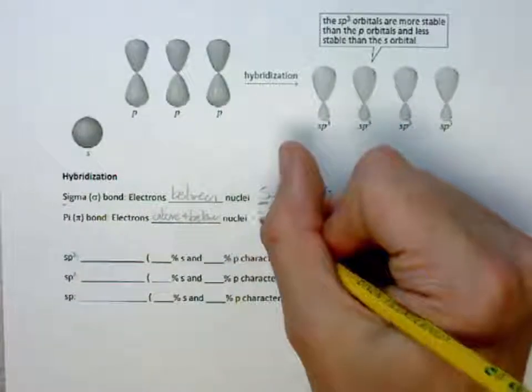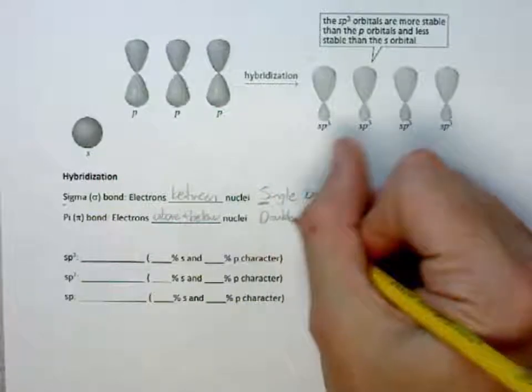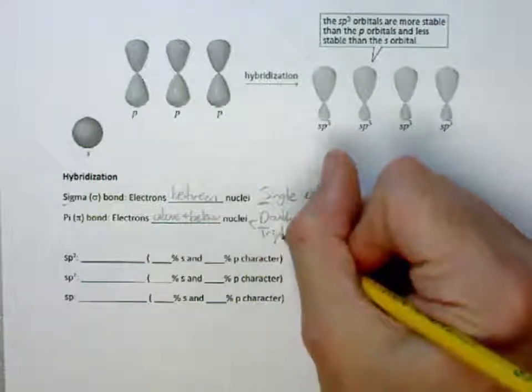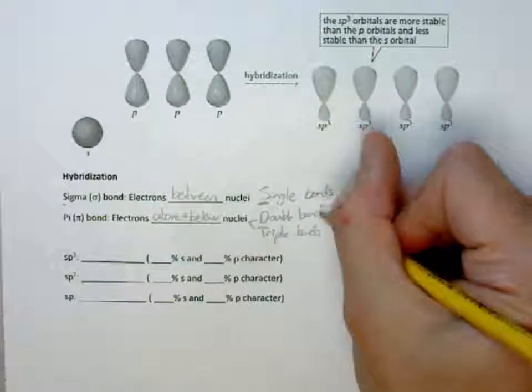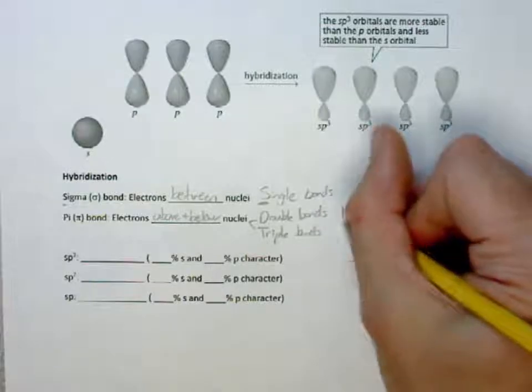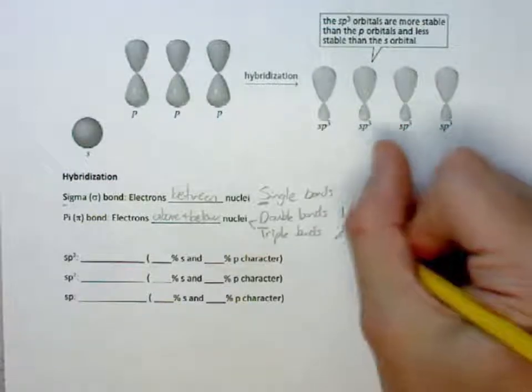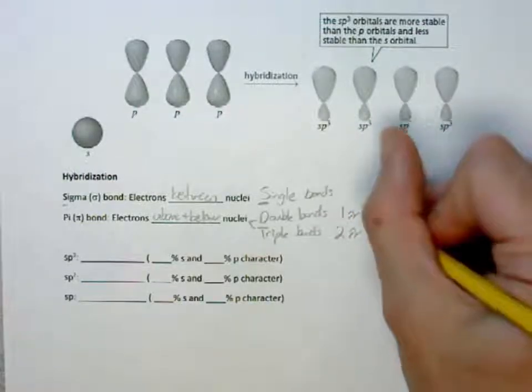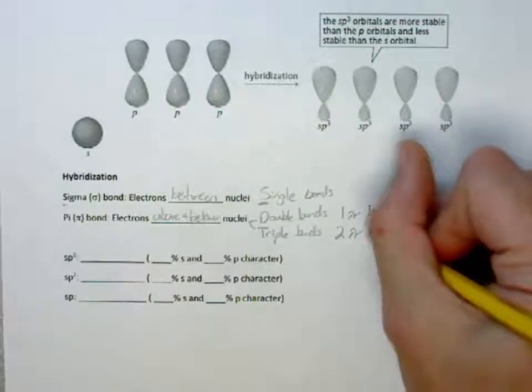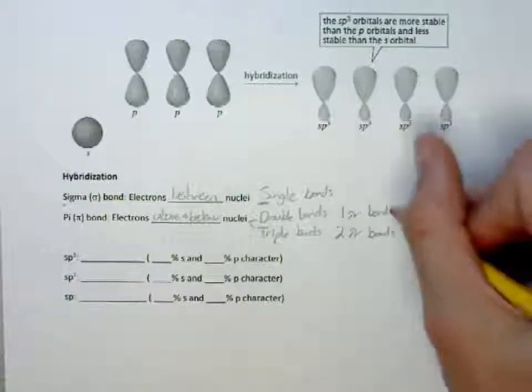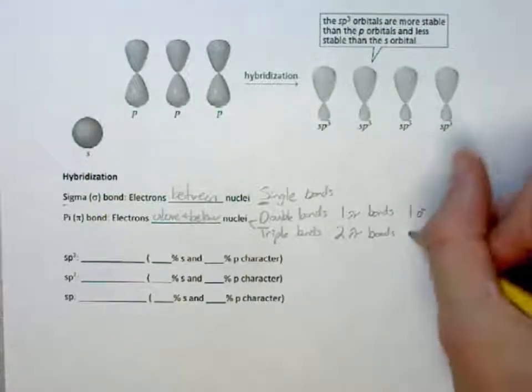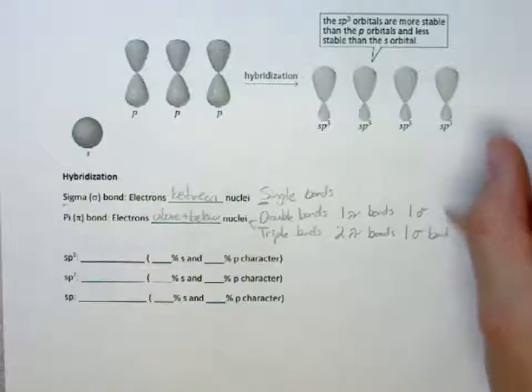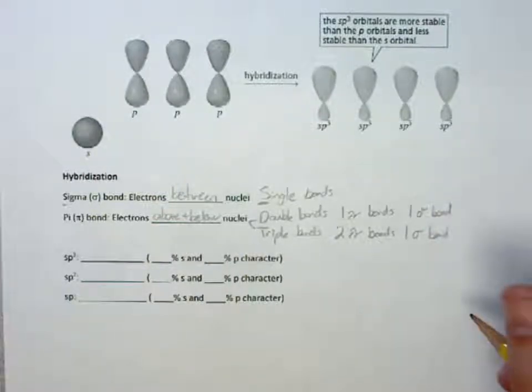And for pi bonds, it's going to be your double and triple bonds. Your double bond is going to have one pi, and your triple bond is going to have two pi bonds. And then you always have a sigma bond. That's going to be your skeletal structure for your bonds.